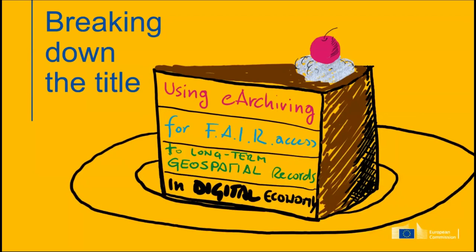I have a cake. As I said, it's a mouthful — it's a cake. We have multiple layers of the cake and we'll start at the bottom. First, we see we have a digital economy. We have long-term geospatial records. Then we have fair access. It's an interesting abbreviation. And using e-archiving — that's the order in which we will eat the cake.